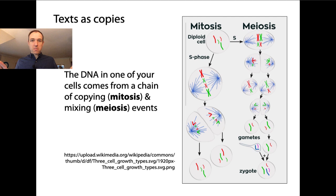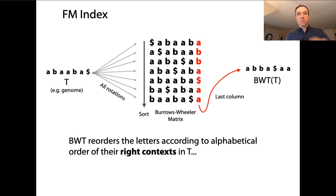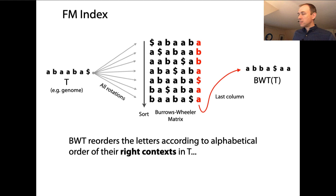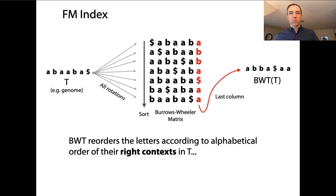Just as a brief reminder: the Burrows-Wheeler transform is a way of permuting the characters of a text into a new order, where that new order is according to the lexicographical order of their right contexts — the alphabetical order of their right contexts in the original string T. The red characters in the Burrows-Wheeler matrix are the permuted string, and the black characters are their right contexts. The whole thing is sorted, so the new order for those characters is according to their right contexts, and this tends to bring like characters together into runs in the BWT.